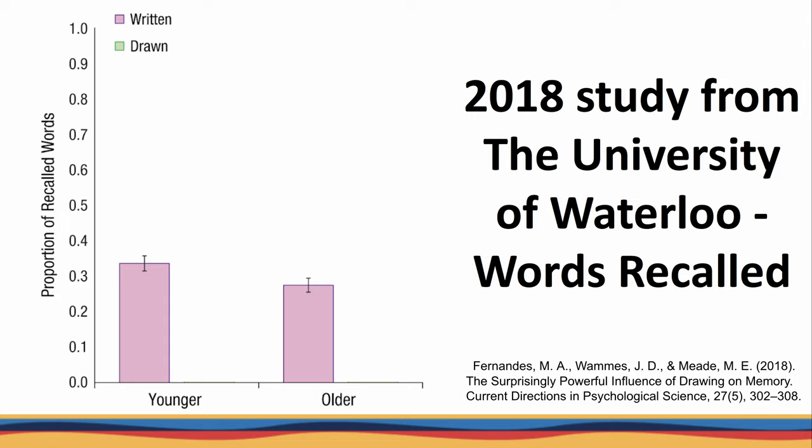Younger people tend to have better memory. However, both groups improved when drawing pictures related to the words — and surprisingly to me, the older group improved even more. So given my age, this is really encouraging. To summarize: the younger group remembered more by just writing using text, but both groups remembered more when they doodled, and the older group improved even more to surpass the younger group.